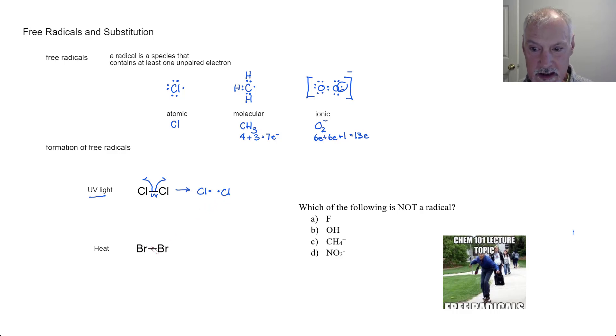We can also accomplish this with heat. Again, at the right particular temperature, we can send an electron that way and an electron that way resulting in two bromine radicals.